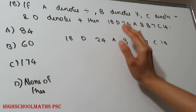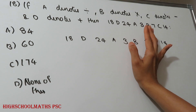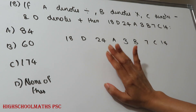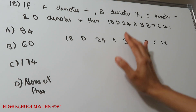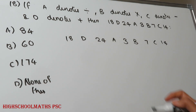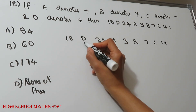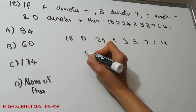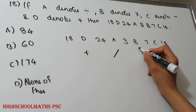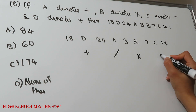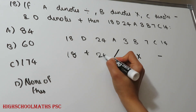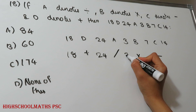Question 18: If A denotes division, B denotes multiplication, C denotes subtraction, and D denotes addition, then evaluate: 18 D 24 A 3 B 8 C 14. Substituting the symbols: 18 plus 24 divided by 3 multiplied by 8 minus 14.